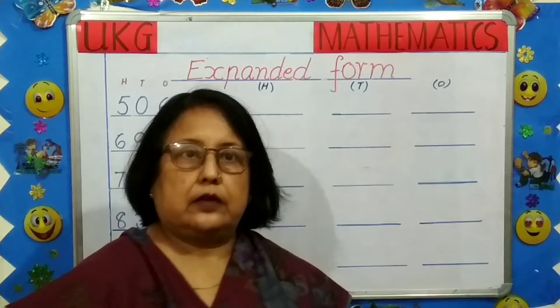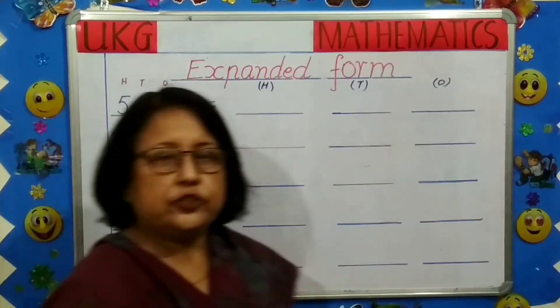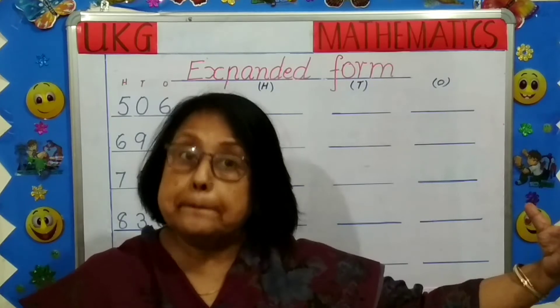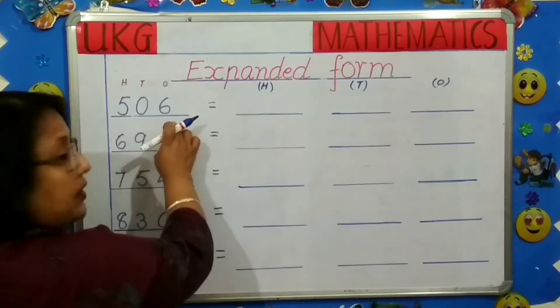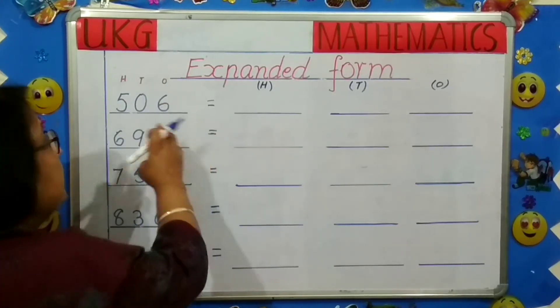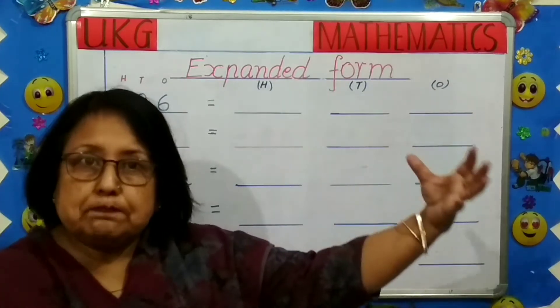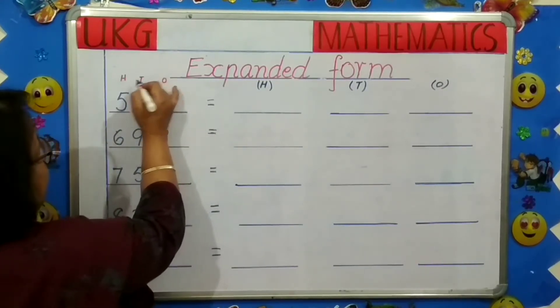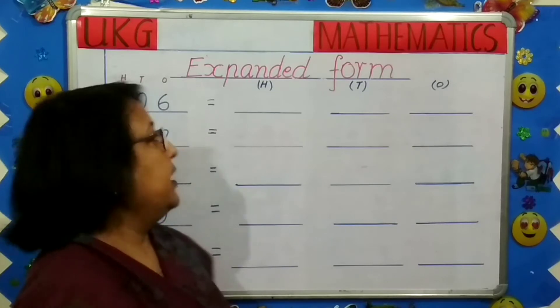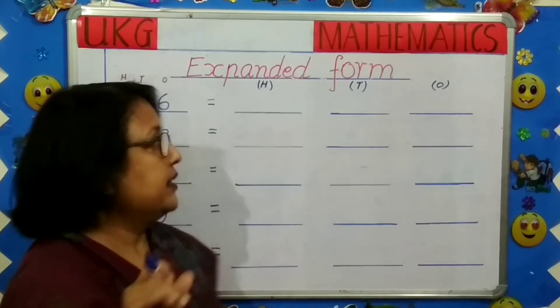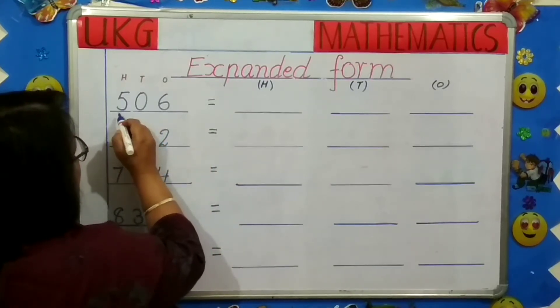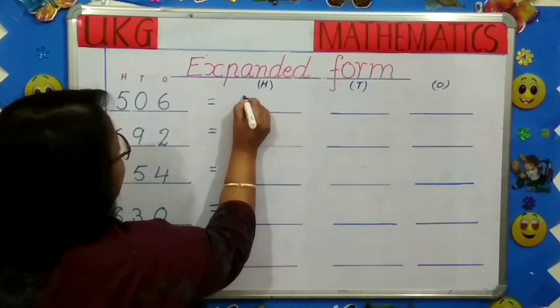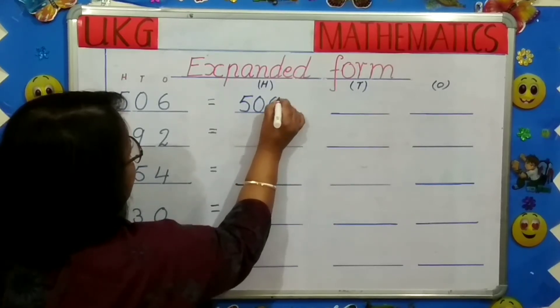So children, moving on to our next topic. Expanded form. Now you need to understand what is expanded form. Expand. Expand means to make big. Now there is a number given over here. 3 numbers are given. Maybe 2 numbers will be given. So you have to make them big. You have to expand them. Now each number is in one house. That is 1s, 10s and 100s. Remember this. If you are able to memorize this, it's very easy. Now, take the first number. 5. 5 is in which house number? 100. So we will write 500 plus.